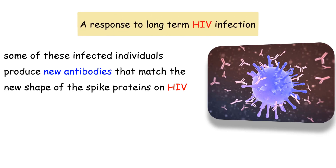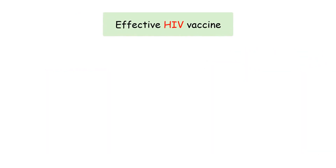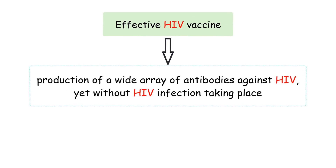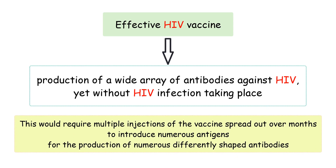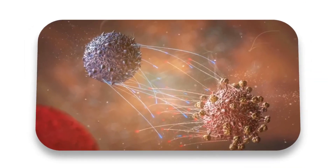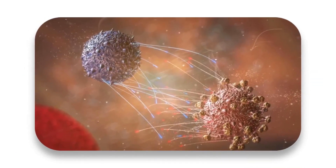This capability of producing new antibodies to bind new spike proteins with each mutation is a response to long-term HIV infection. An effective HIV vaccine would produce the same result — production of a wide array of antibodies against HIV, yet without HIV infection taking place. This would require multiple injections of the vaccine spread out over months to introduce numerous antigens for the production of numerous differently shaped antibodies.